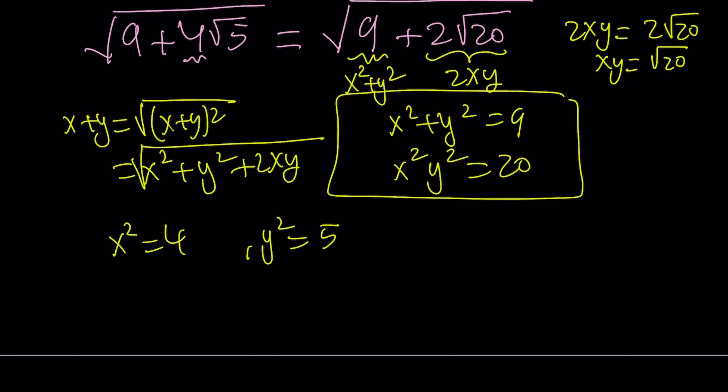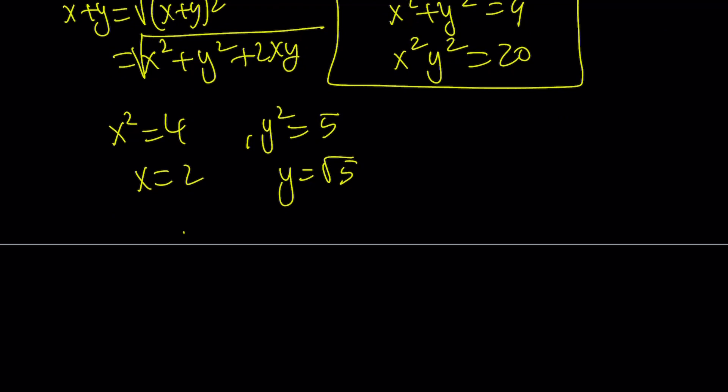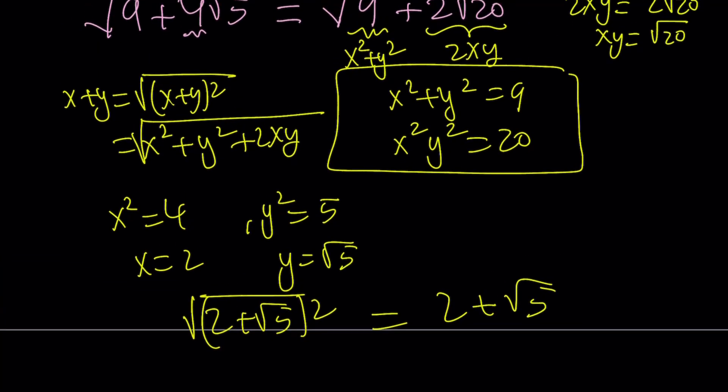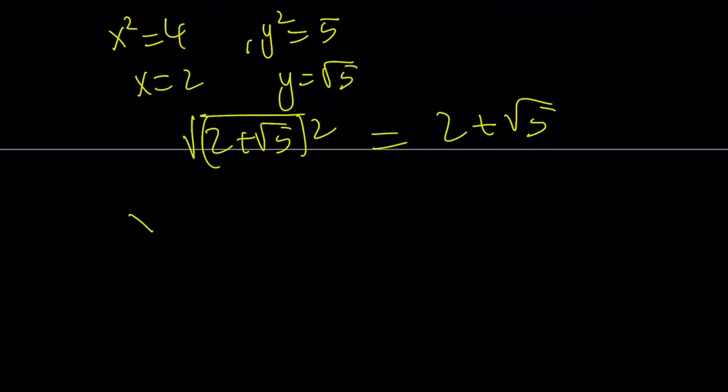I can now write it as, since x is going to be 2 and y is going to be root 5 from here, I'm basically dealing with the square root of 2 plus root 5 squared, and that is equal to 2 plus root 5. So, that is the result of square rooting. In other words, the square root of 9 plus 4 root 5 is equal to 2 plus root 5. Make sense?